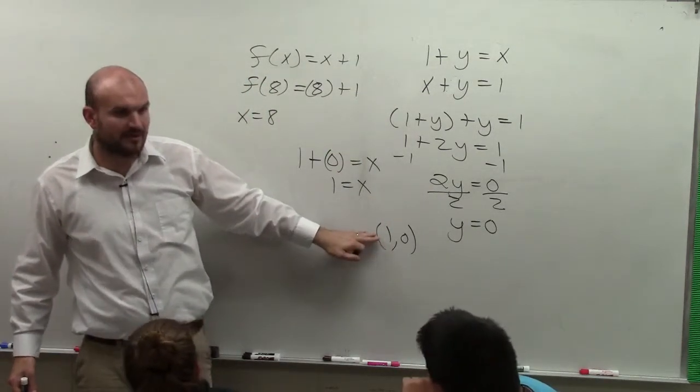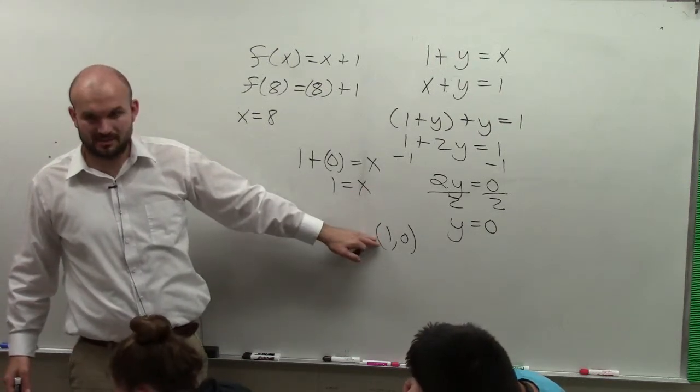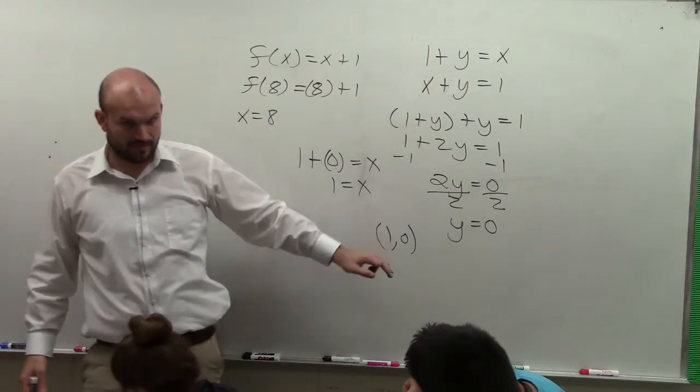So since they intersect at one point, this would be called an independent, consistent system. Does that make sense?